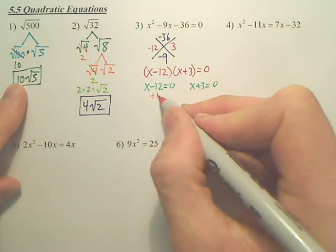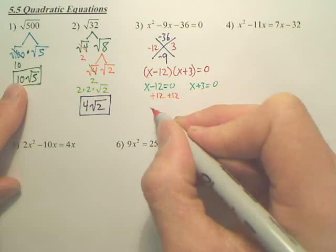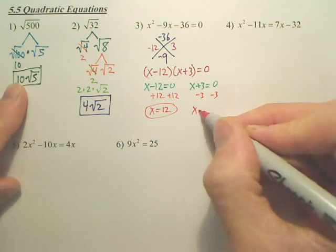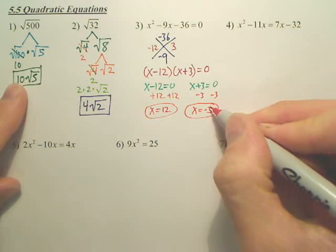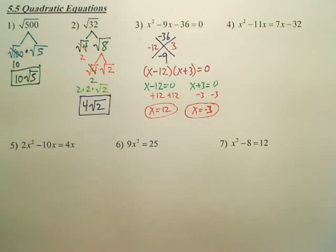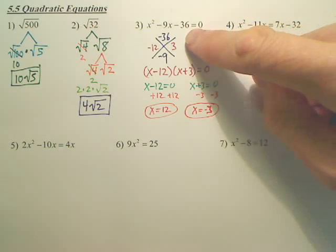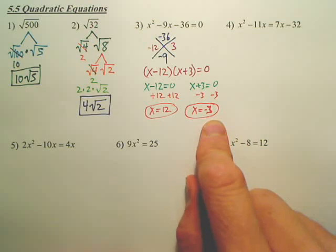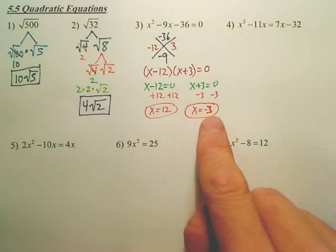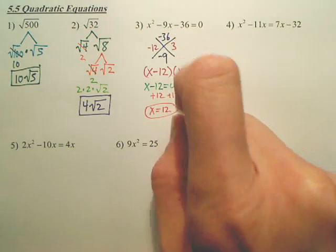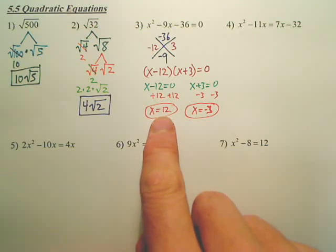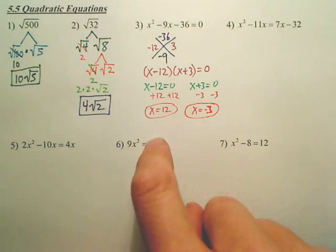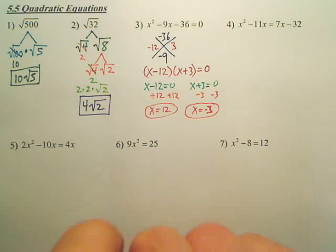So what I do is I add 12 over, so x equals 12. Here I minus 3 over, so x equals negative 3. So what did I just do? I factored. I set my two factors equal to 0. And I got my two answers. Meaning 12 and negative 3 both make this true. It has two answers. Anytime you have an x squared, you can have two answers, or less. You can have 1. You can have 0 as well.